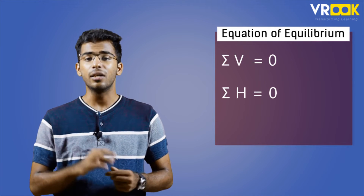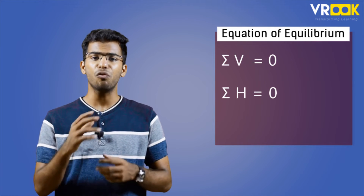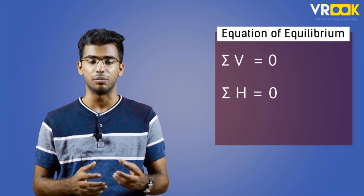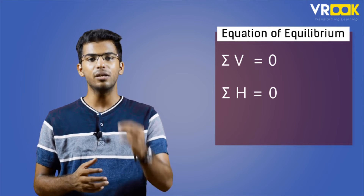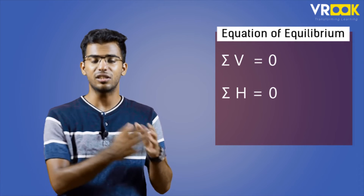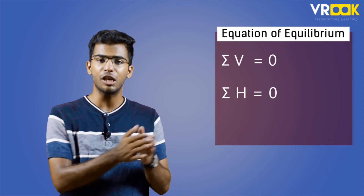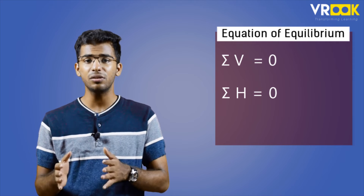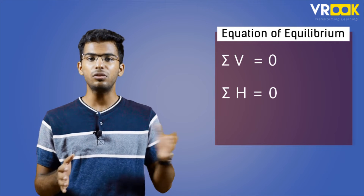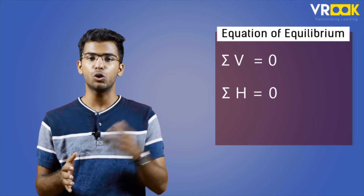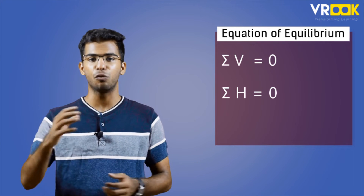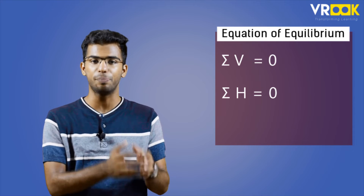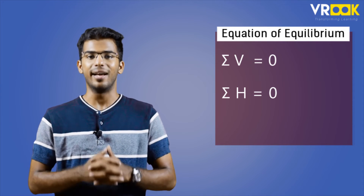Secondly, the summation of horizontal forces in the system should be zero — that is, sigma H equals 0 — which means forces acting to the right and forces acting to the left of an object should be equal.